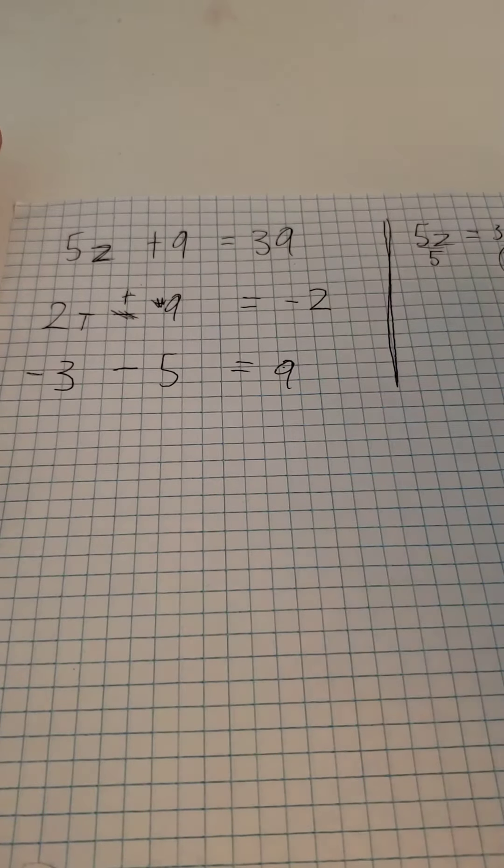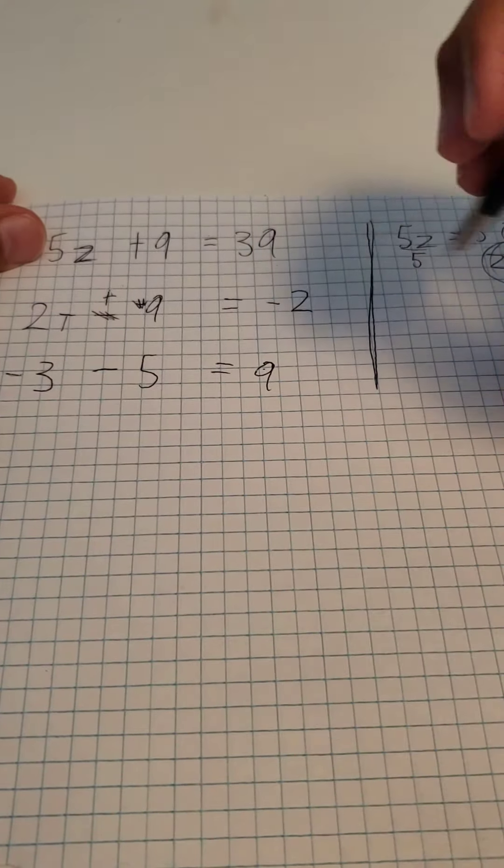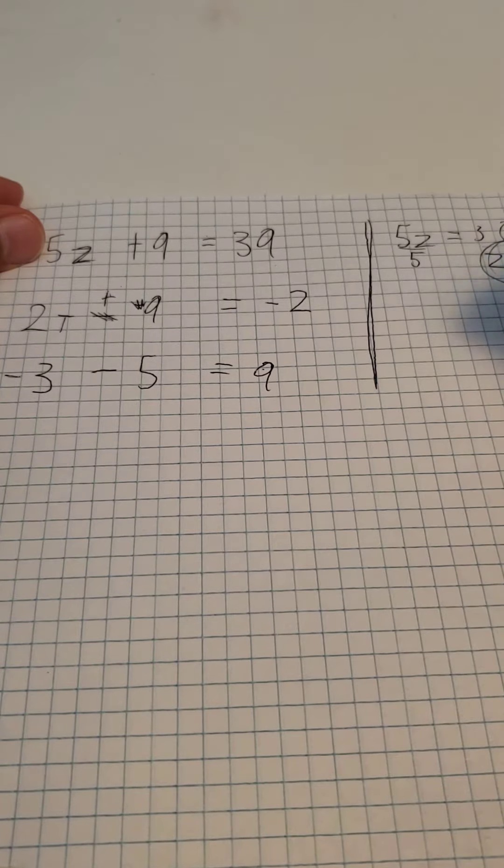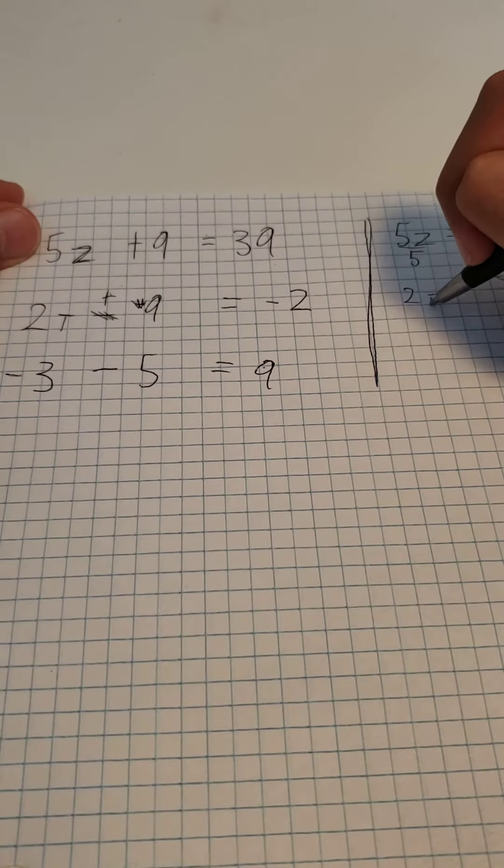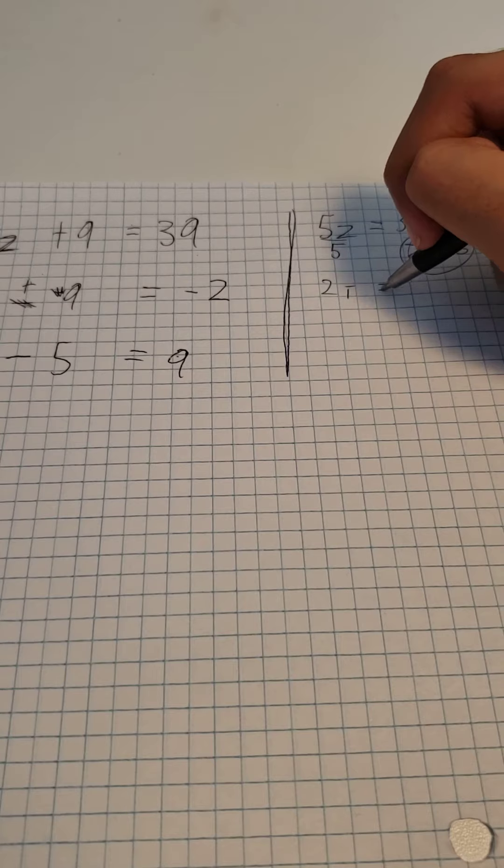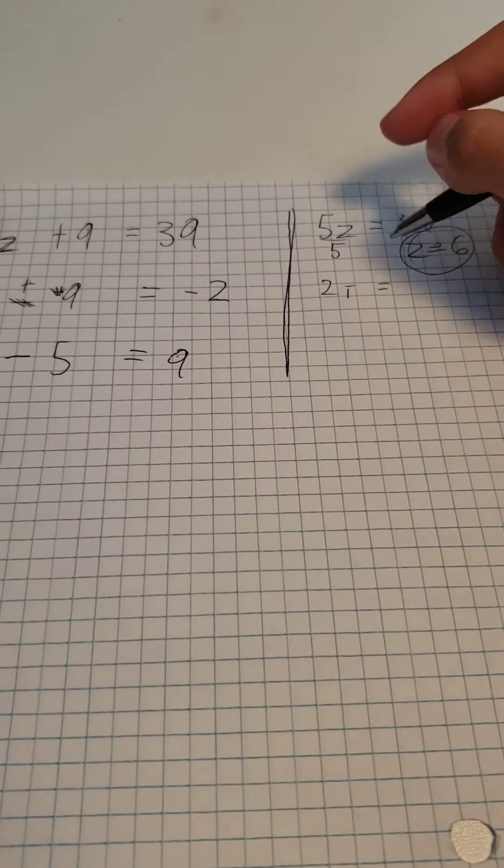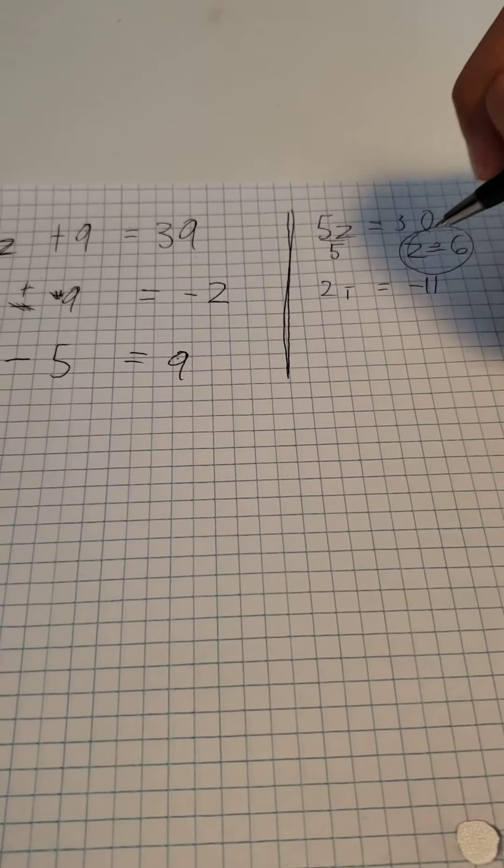So you do the exact same thing as you did over here. Subtract 9 from minus 2, and you get 2t equals minus 11.